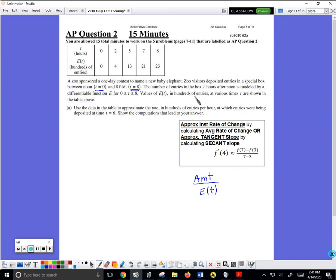Values of e in hundreds of entries, that could be important, hundreds of entries are shown. Use the data in the table to approximate the rates. We have an amount, but we are approximating a rate.